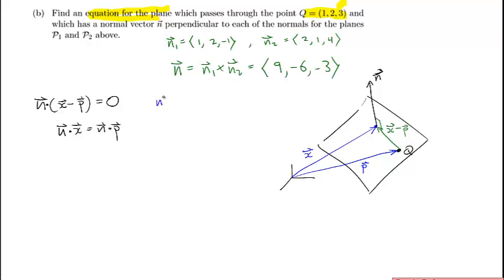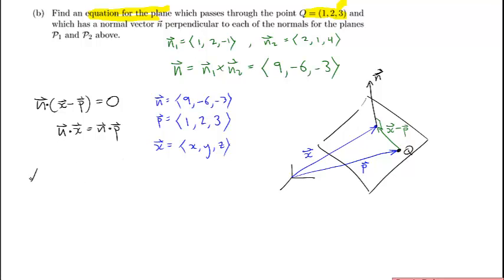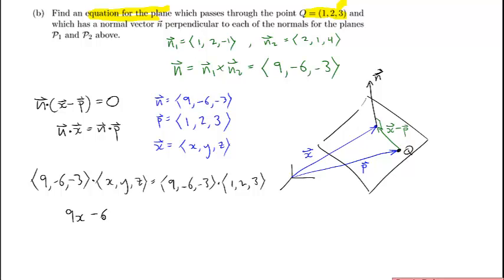N is ⟨9, −6, −3⟩, and P is the position vector of the given point (1, 2, 3). X represents any arbitrary point on the plane. Plugging into the equation: ⟨9, −6, −3⟩ dot ⟨x, y, z⟩ equals ⟨9, −6, −3⟩ dot ⟨1, 2, 3⟩. The right-hand side computes to 9 minus 12 minus 9, which equals −12. So the equation of the plane is 9x − 6y − 3z = −12.